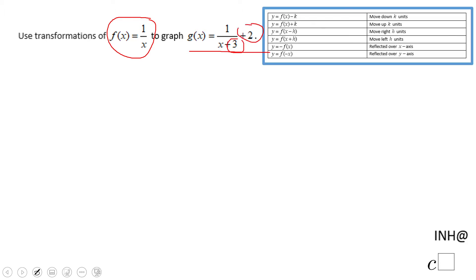If we look to these rules of transformation, the plus 3 goes with this one: left 3 units. And the plus 2 is going to go with this one: move up 2 units.